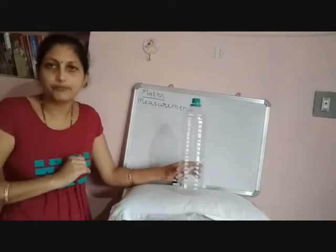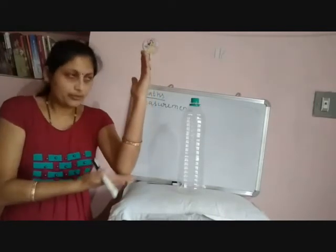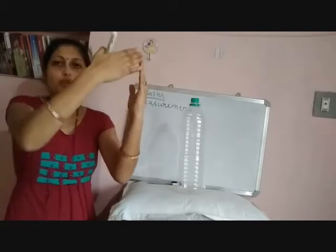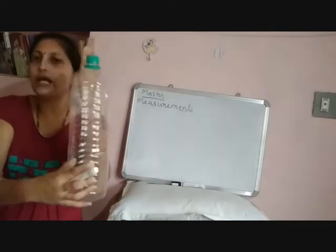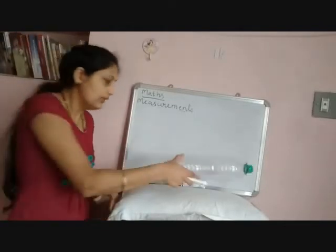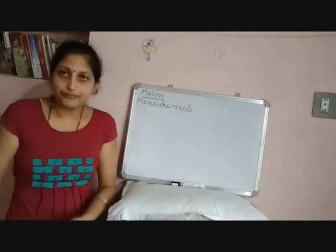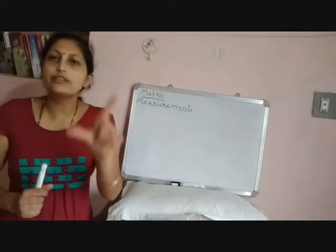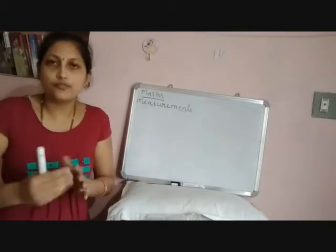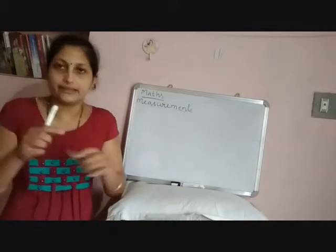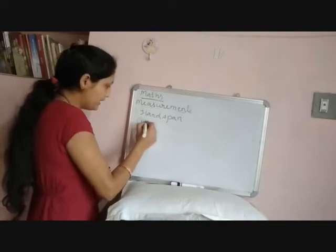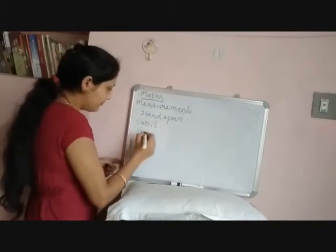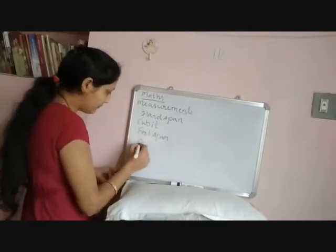This length is called hand span. Next, from the elbow to the tip of the finger — this length is called cubit. So this bottle is nearly one cubit long. Next, from the ankle to the tip of the toe is called foot length or foot span. And if you use both feet one after another to measure an object, that is called pace. So we have hand span, cubit, foot span, and pace.